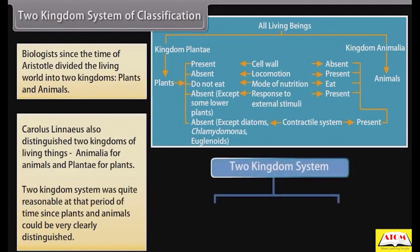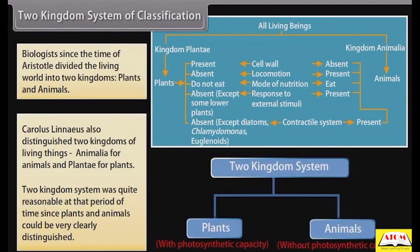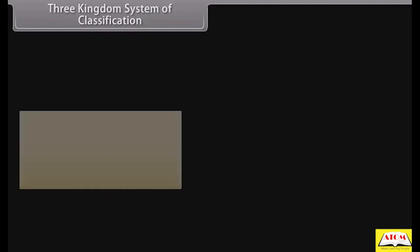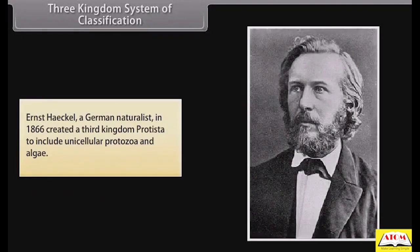The Two Kingdoms System was quite reasonable at that period of time, since plants and animals could be very clearly distinguished. Ernst Haeckel, a German naturalist, in 1866 created a third kingdom, Protista, to include unicellular protozoa and algae.